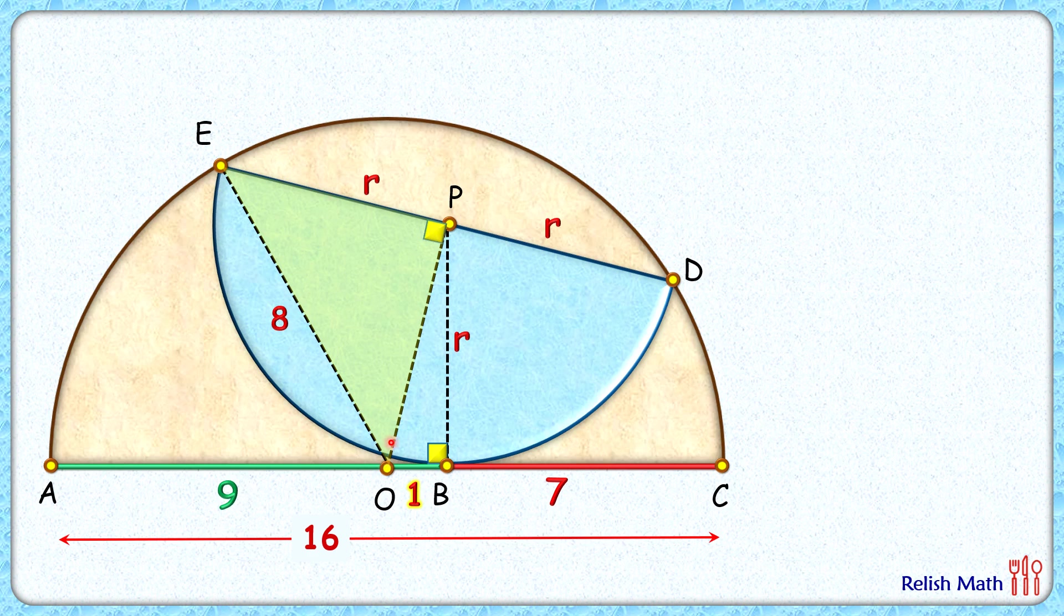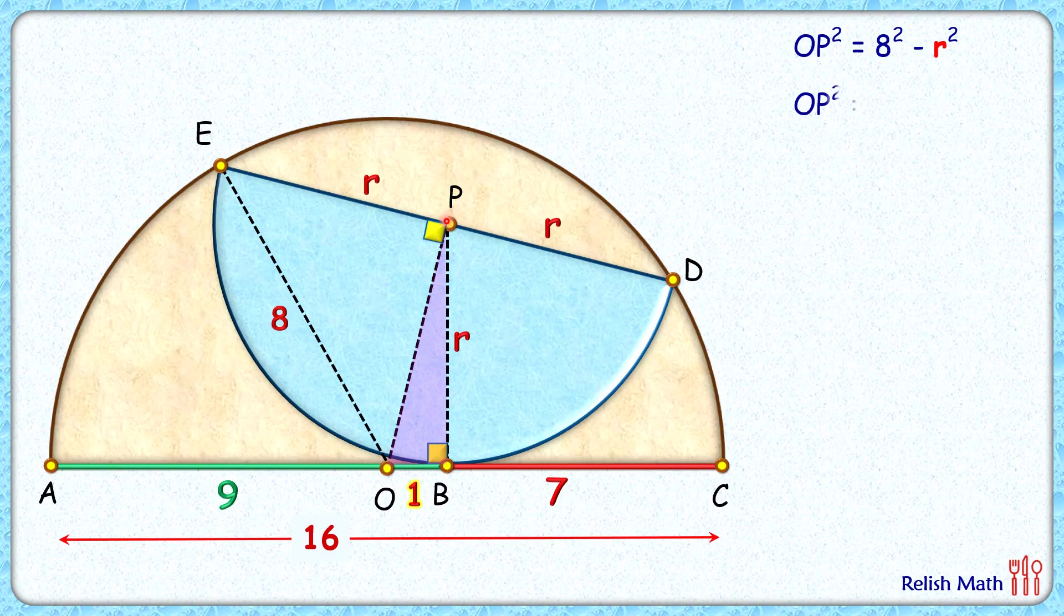Or OP² equals 8² minus r². Also, in this pink triangle, if we apply Pythagorean theorem, we'll get OP² equals r² plus 1². Now subtracting these two equations...